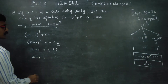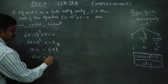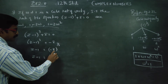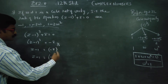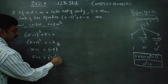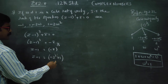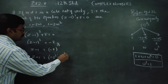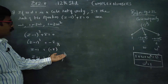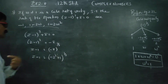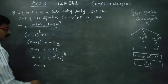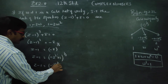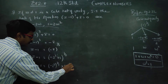Z minus 1 is equal to minus 8, which can be written as minus 2 cube. Minus 2 into minus 2 into minus 2 is minus 8. So we write minus 8 as minus 2 power 3, whole power 1 by 3. The cube root of unity is equal to omega, so 1 power 1 by 3 gives the cube roots of unity.